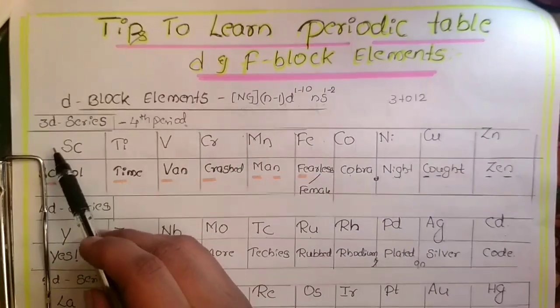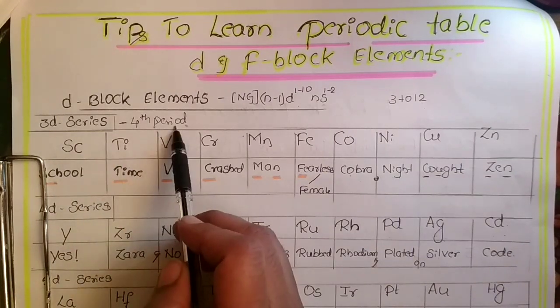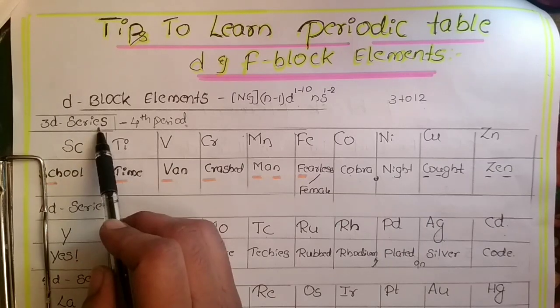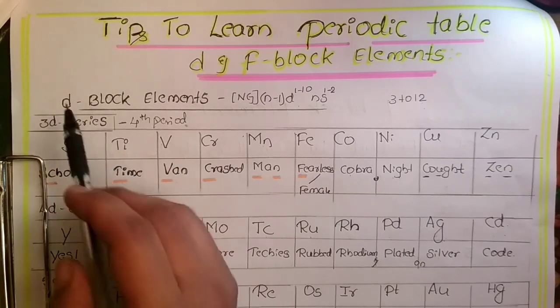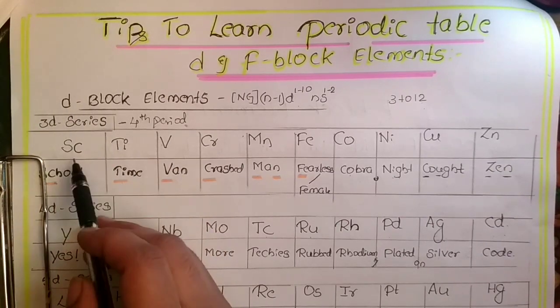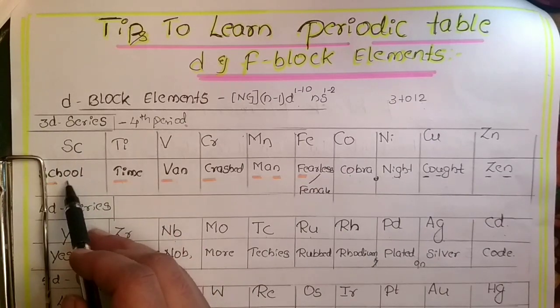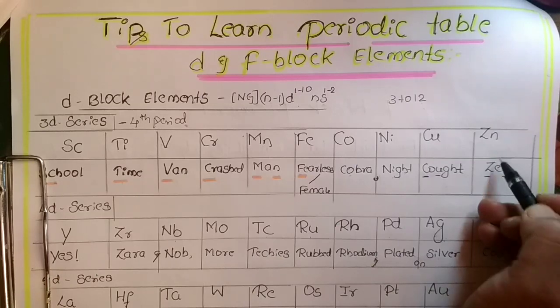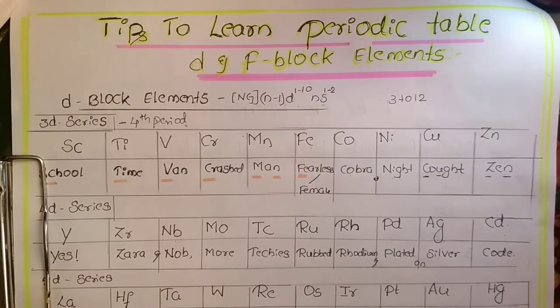From fourth period the D block elements will start, and the fourth series are known as 3d series. The reason for calling it 3d is because here the 3d orbital will gradually fill from 3d1 up to 3d10. We might discuss this in another video.